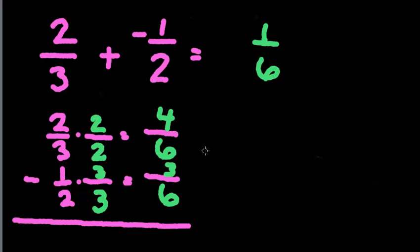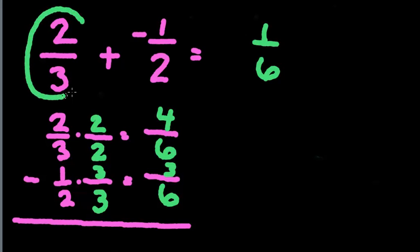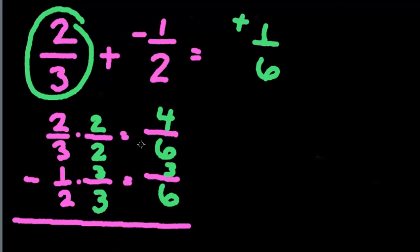Now I have to decide what sign to take. Since these were alternate signs, I look for the bigger number. The bigger number was 2 thirds, so I choose the sign that went with the bigger number. The bigger number had a positive sign, so the sign I'm going to keep is positive. So the answer is going to be positive 1 sixth.